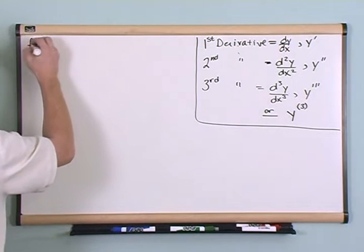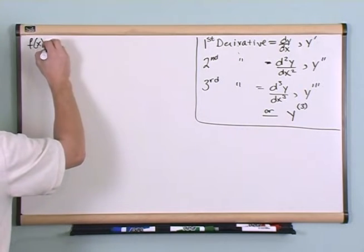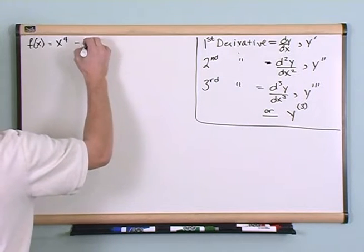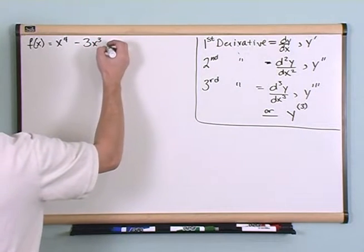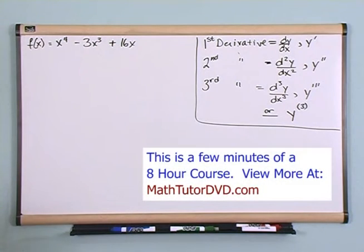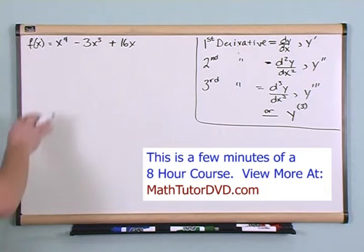So what if you have f of x is equal to x to the fourth power minus 3x to the third power plus 16x. And the question is, find the first and the second derivative of this function.